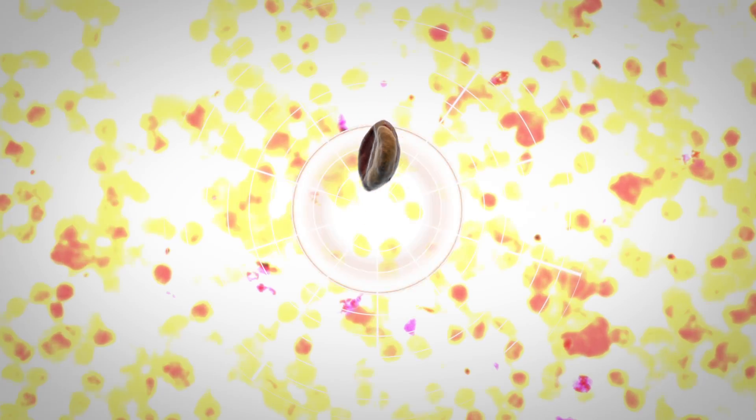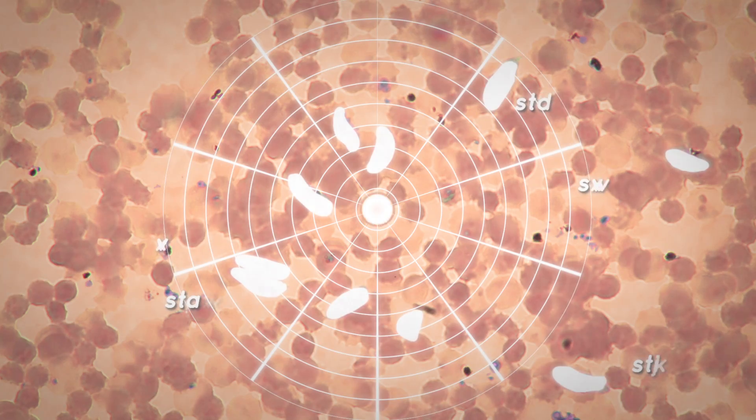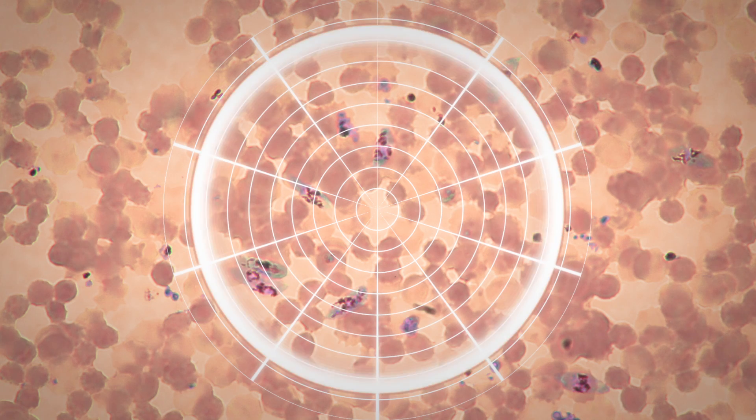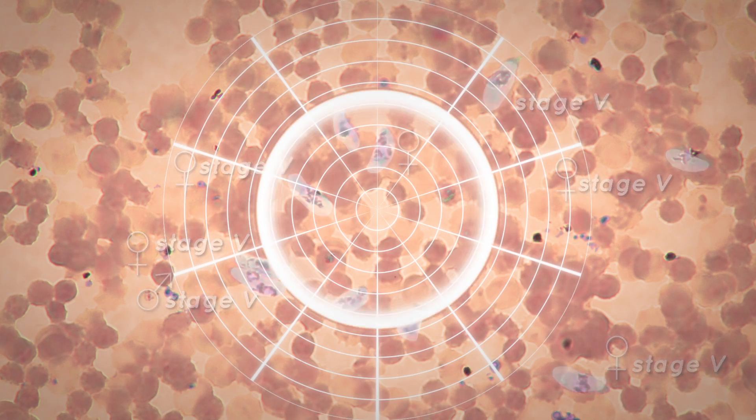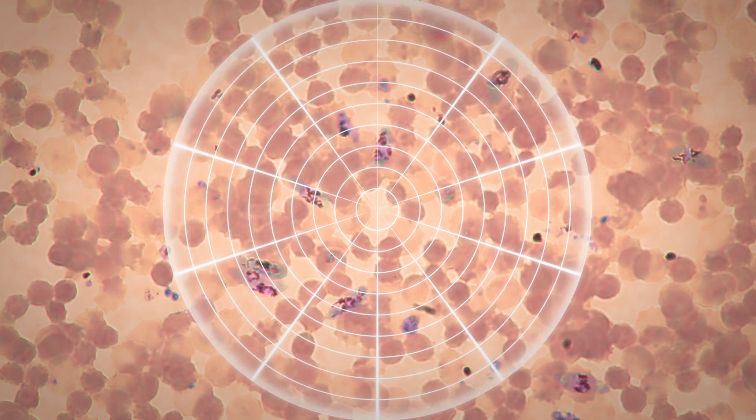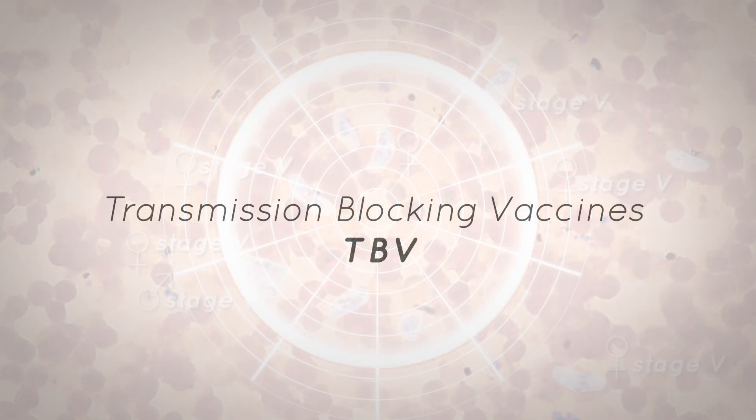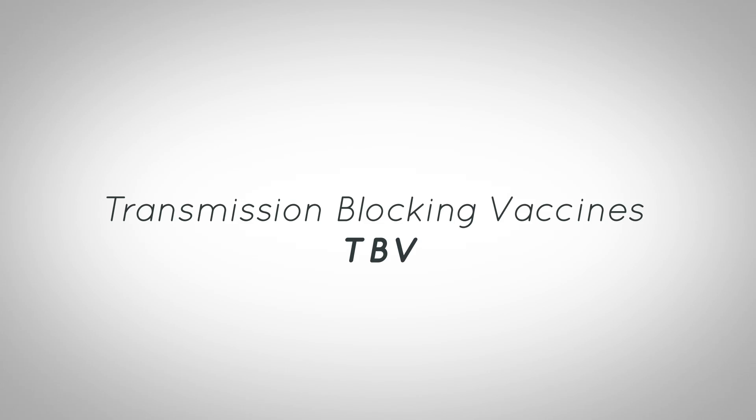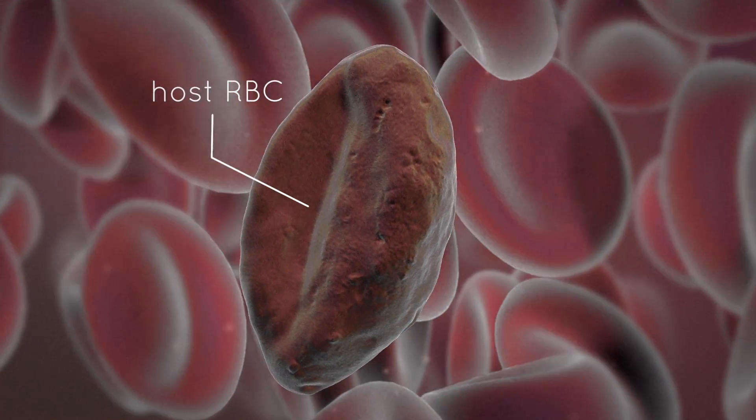Interventions to block gametocyte persistence in the bloodstream and transmission to mosquitoes are urgently needed, especially in the context of malaria elimination and eradication. Transmission blocking vaccines, TBV. Following immunization with a TBV,